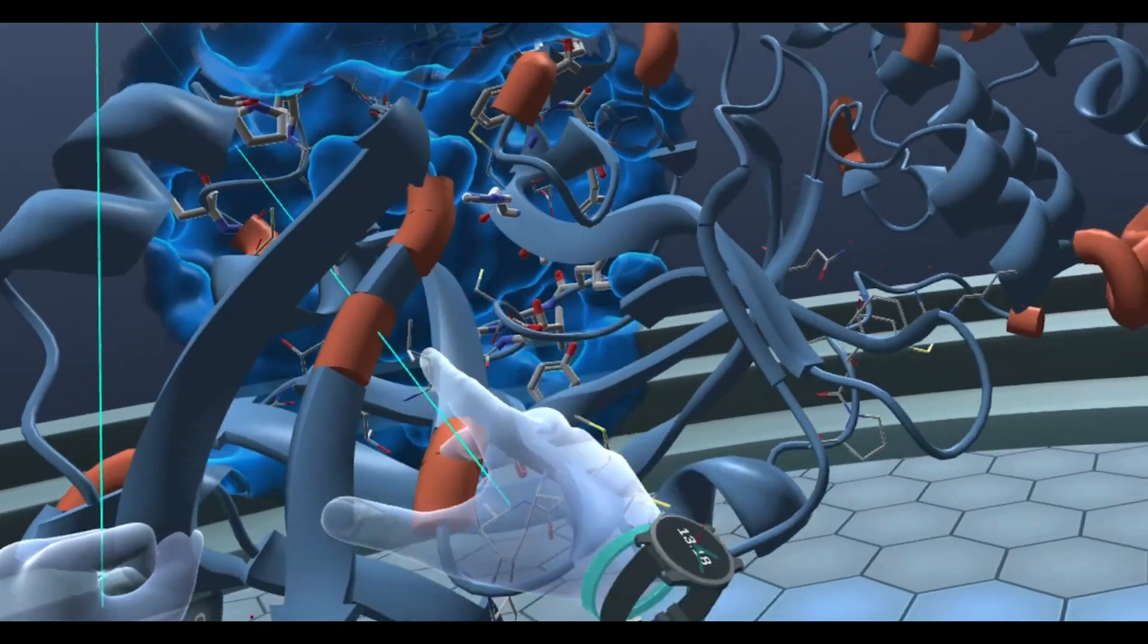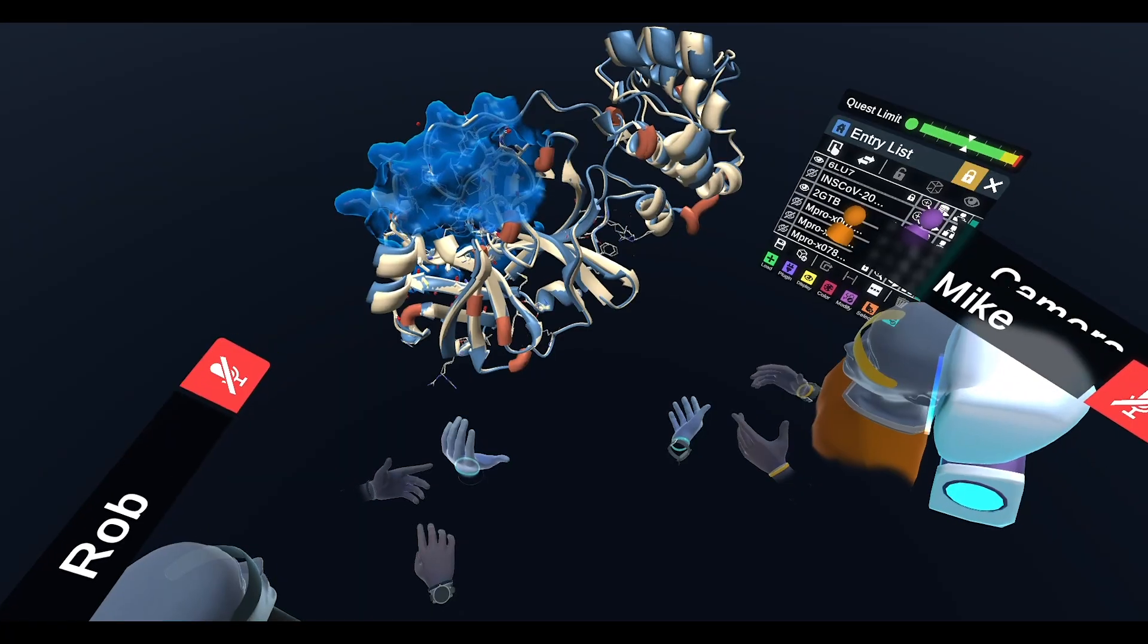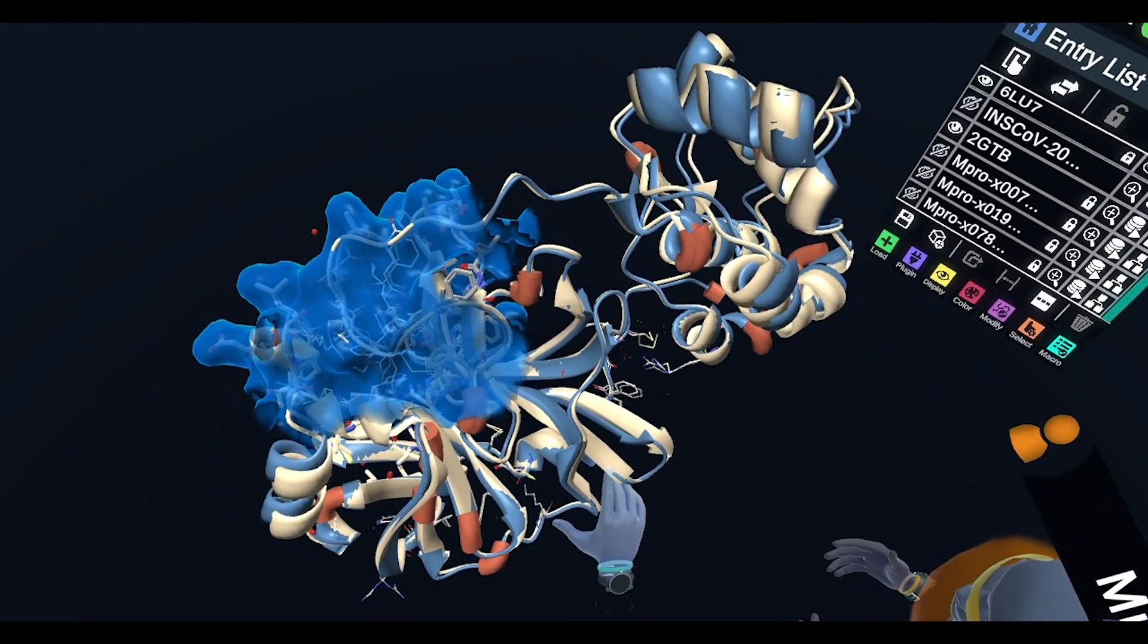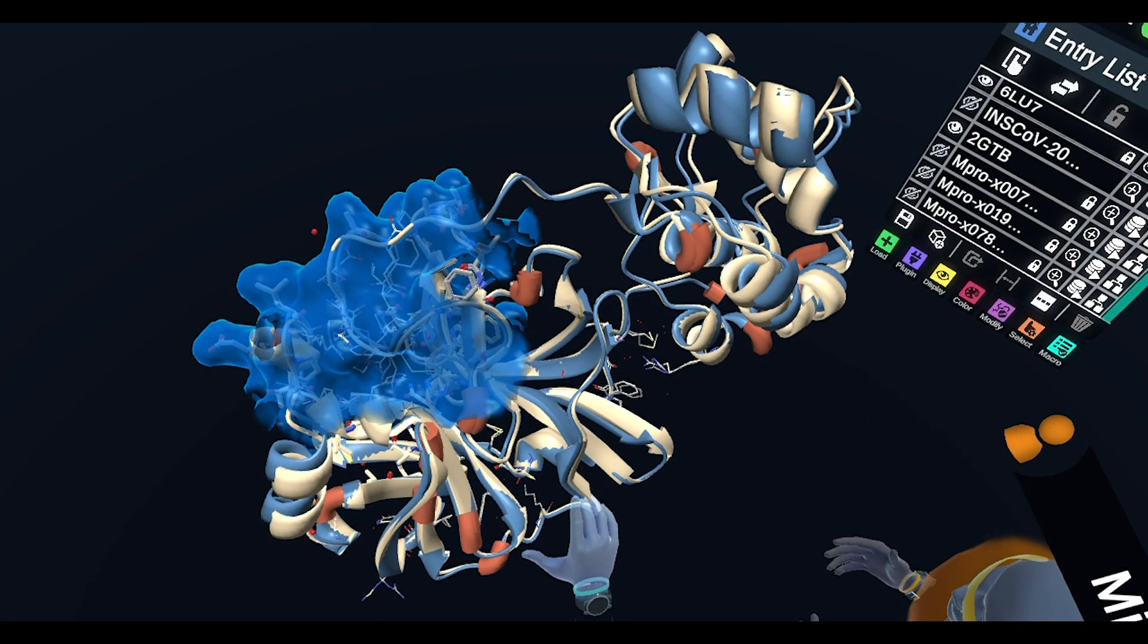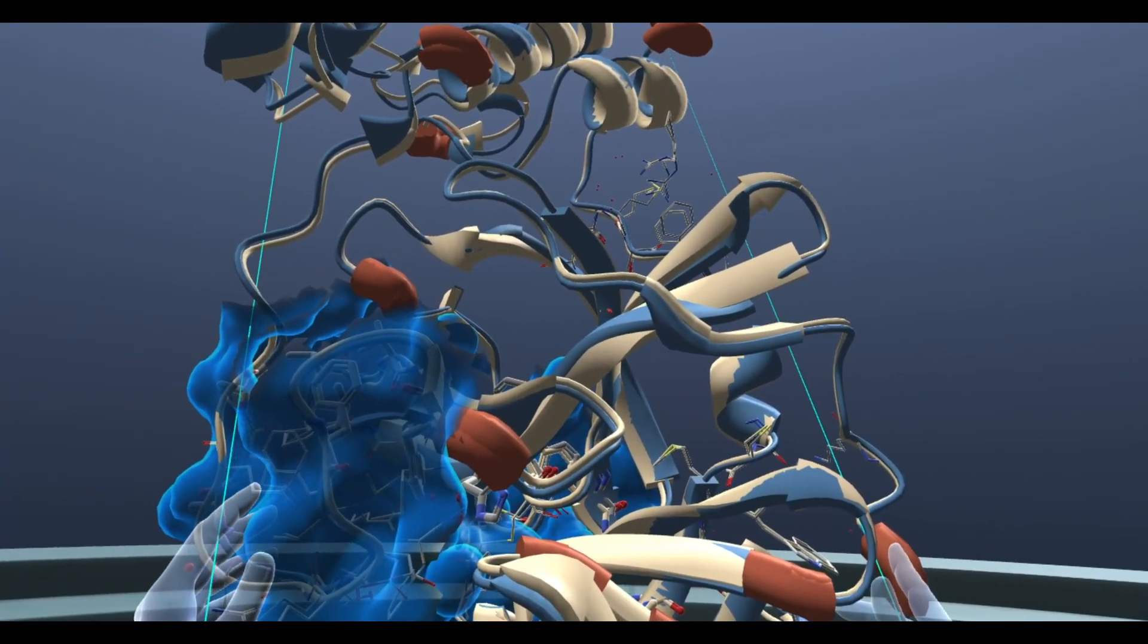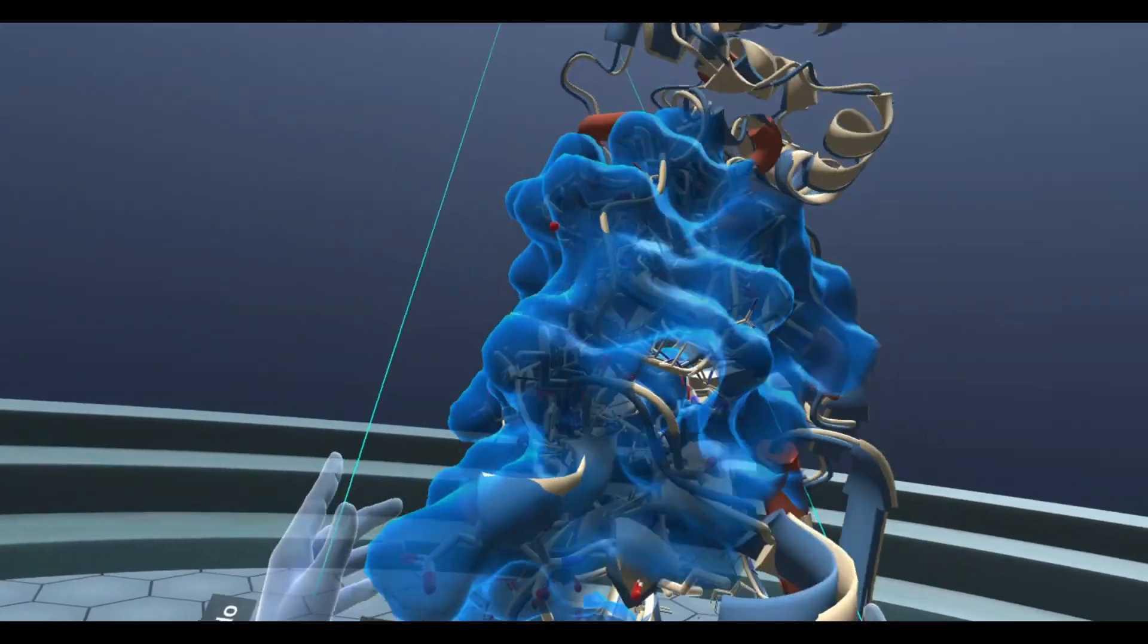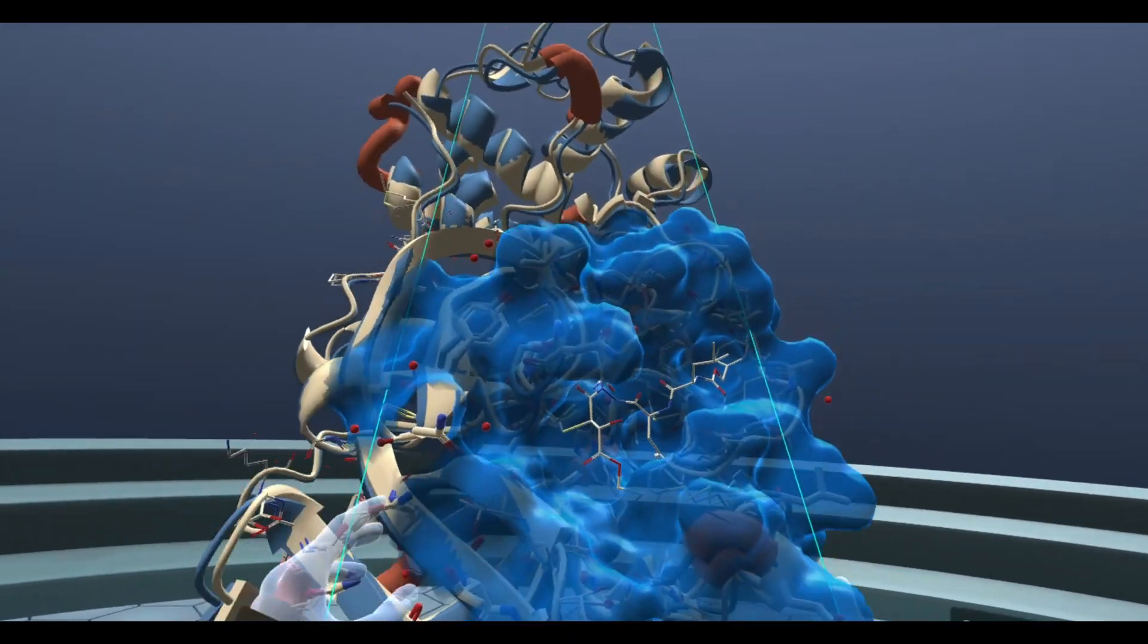These areas highlighted in orange are all the differences between the beige structure, which is from the SARS outbreak in 2003, and the blue structure, which is from the current COVID-19 outbreak of SARS. So all the mutations—the differences between the old version of SARS and the new version of SARS that we have—were not around the binding pocket.